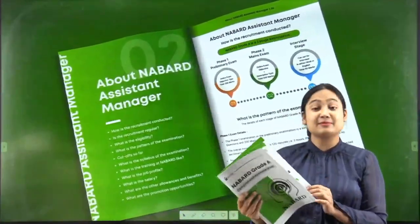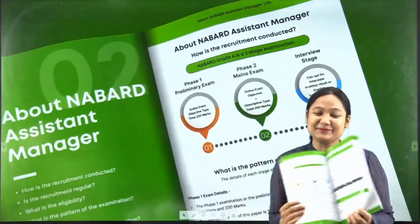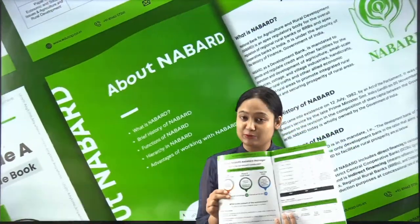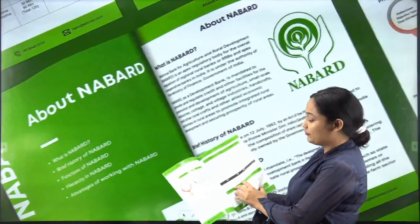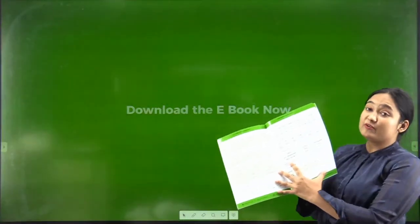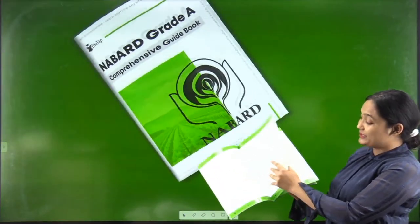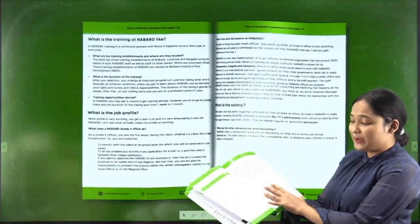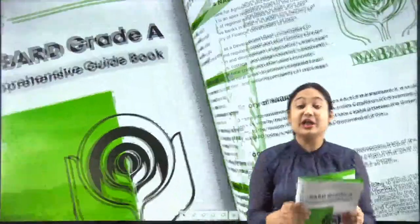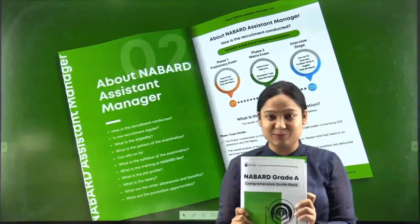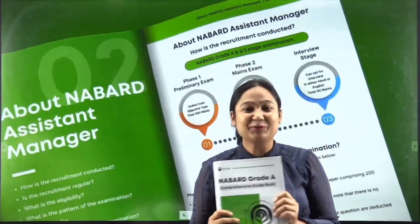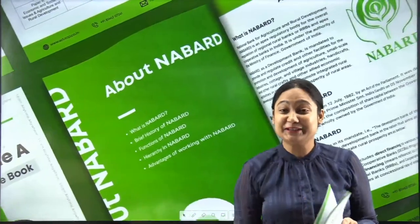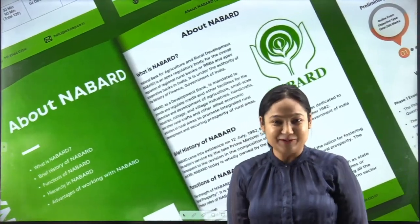Yesterday somebody asked me about the strategy. Now you don't have to ask me — just download the link. This book provides all the information: age relaxation, sectional cutoff, number of sections, syllabus of the NABARD examination, salary, benefits, and promotion details. You don't need to buy it — you can download it for free from the description box. It will also encourage you to become a NABARD officer.